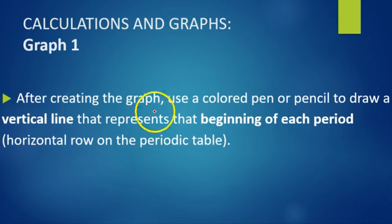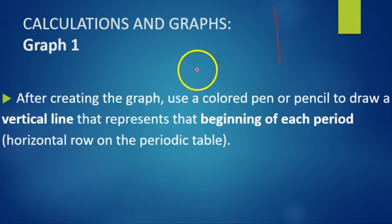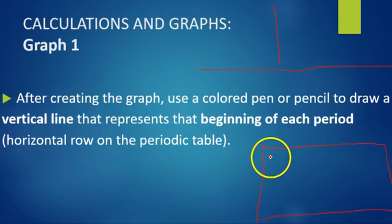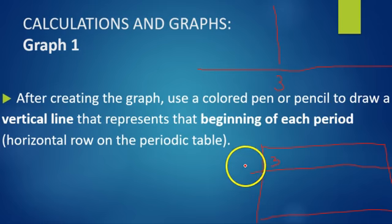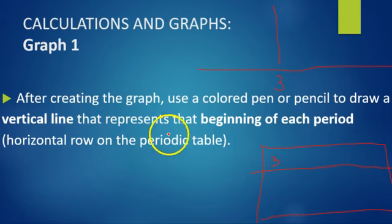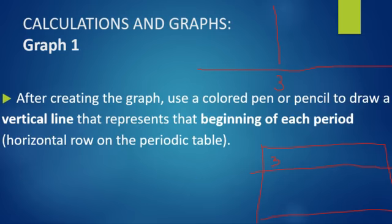After you create graph number one, you are going to use a colored pencil and draw a vertical line — vertical goes up and down — that represents the beginning of each period on the periodic table. You'll need to look on the periodic table to see which element is the first element in each period, and draw a vertical line for that element. You must make your graph first before adding the lines. Remember, a horizontal row on the periodic table is a period.